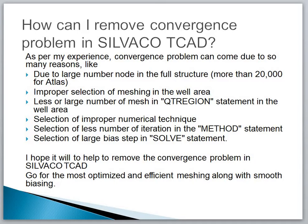The second cause is improper selection of meshing in the well area. The third cause is less or large number of meshing in the county region statement in the well area — you must take care of the county meshing, where you need fine or coarse meshing. The fourth cause is selection of an improper numerical technique. If you are using the improper numerical method — Gummel, Newton, or Block — you have to select the particular method suited for your particular structure.